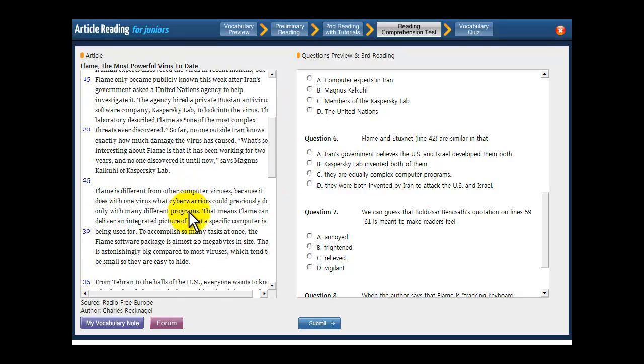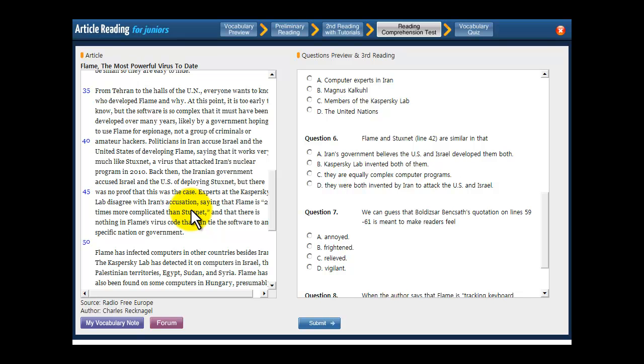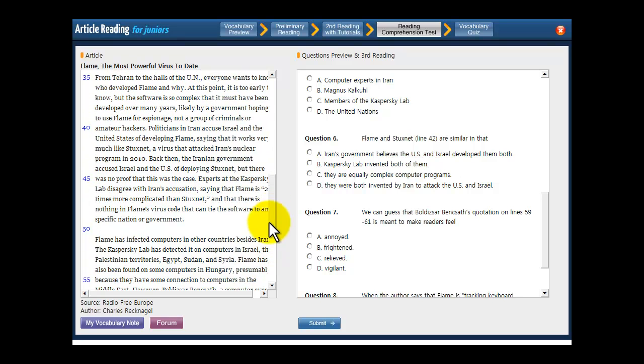Let's go down to 42 to see if there's any evidence down there. Politicians in Iran accuse Israel and the United States of developing Flame, saying that it works very much like Stuxnet, a virus that attacked Iran's nuclear program in 2010. So they're similar in that they both attacked the Iranian nuclear program. Yeah, and that Flame is more complicated than Stuxnet, but they're very similar otherwise.